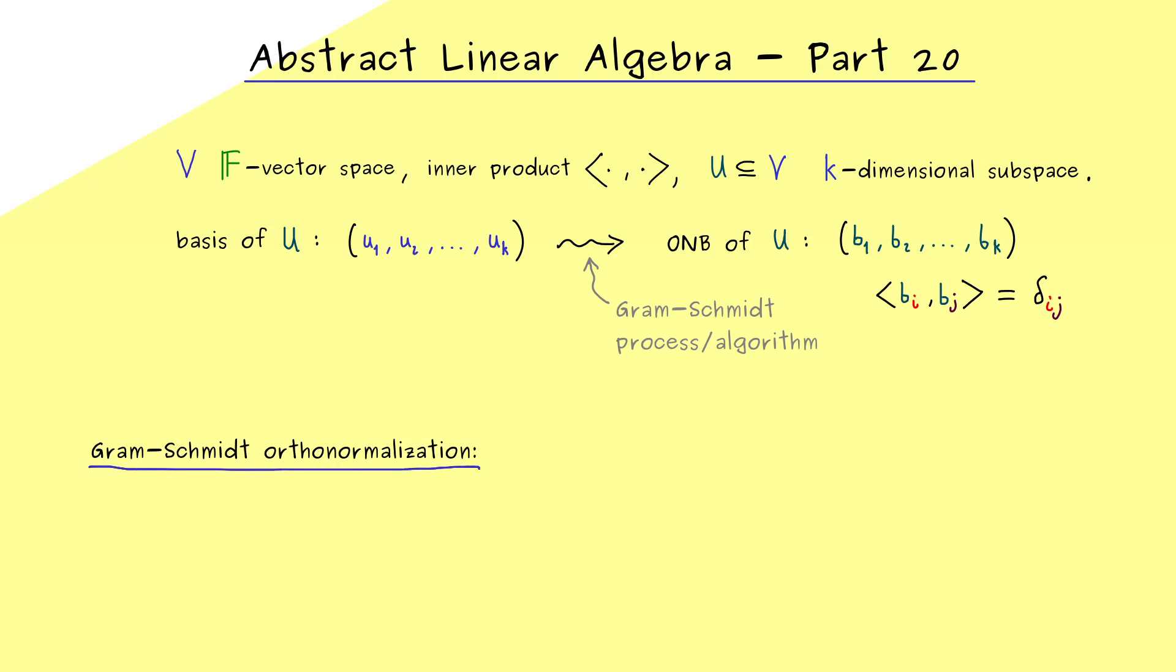So we start with the first one. So for the first step, we can just take our vector u₁ and ask if it has length 1. And of course, if we say length, we measure it with respect to our inner product. Then maybe the length is not 1, but then we can just normalize it. This means we just scale the vector u₁ by 1 divided by the length, so the norm of u₁ goes in here.